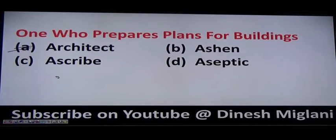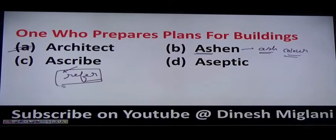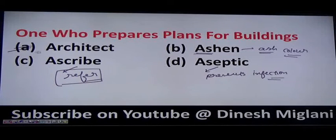Let us have a few more words here. Ashen (A-S-H-E-N) means something which is ash-colored. Ascribe (A-S-C-R-I-B-E) means to refer or assign something. Aseptic means preventing infection — similar to antiseptic, something that prevents infection is said to be aseptic. One who prepares plans for a building is known as architect.